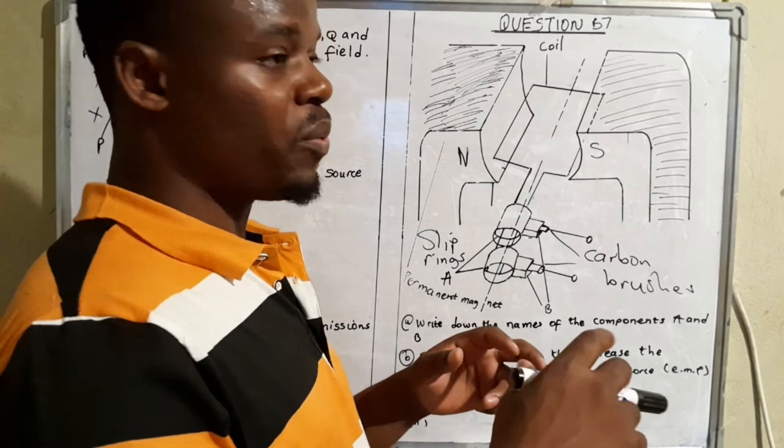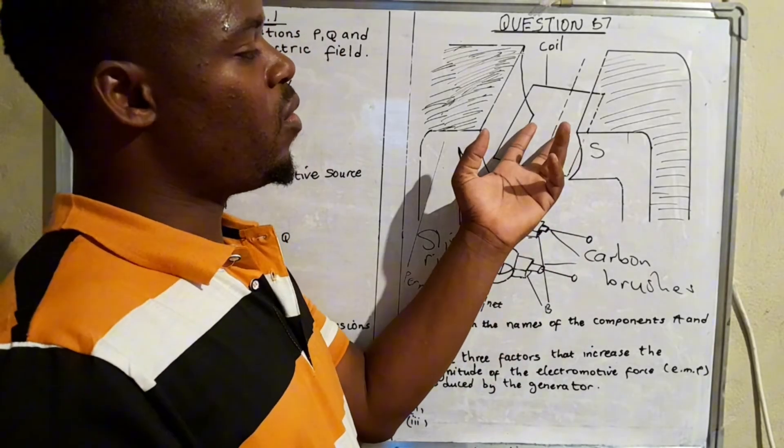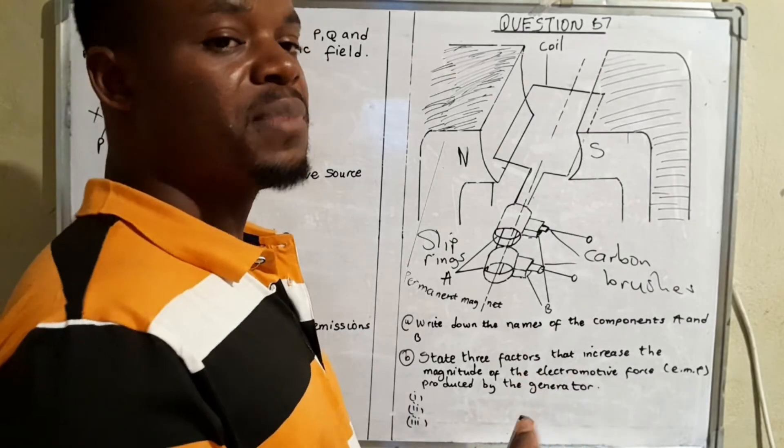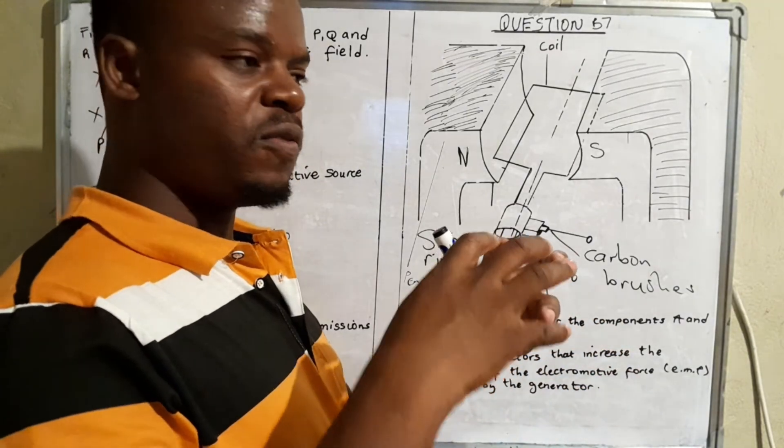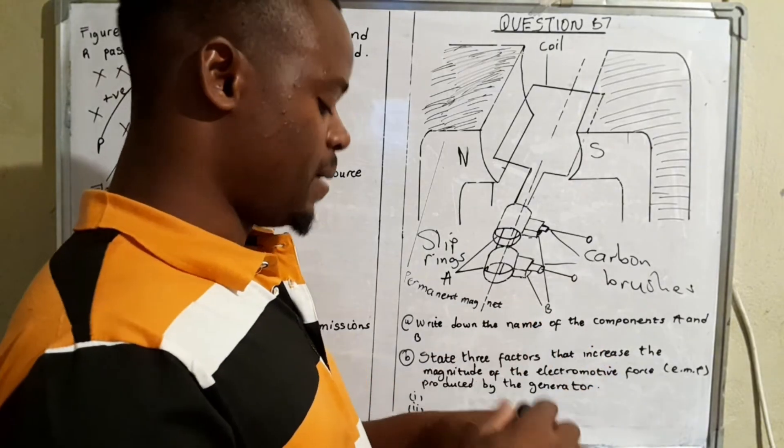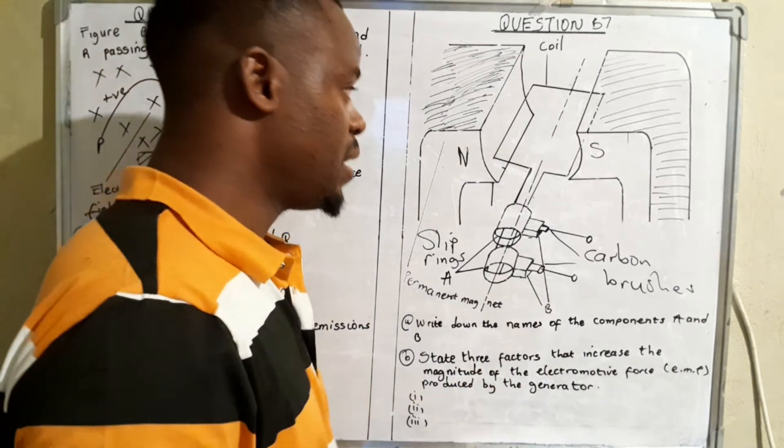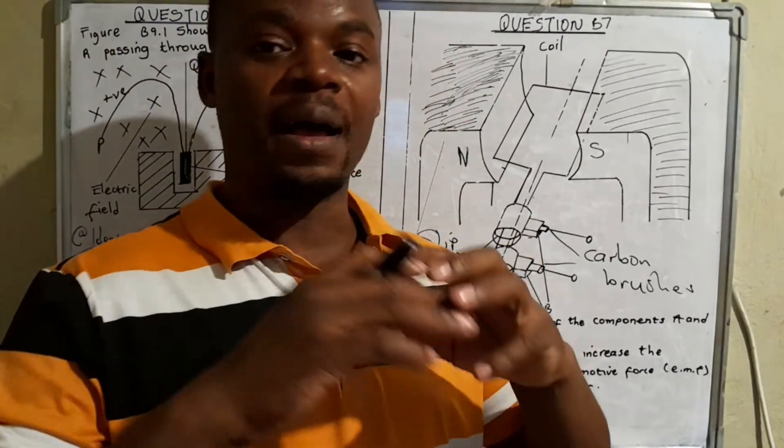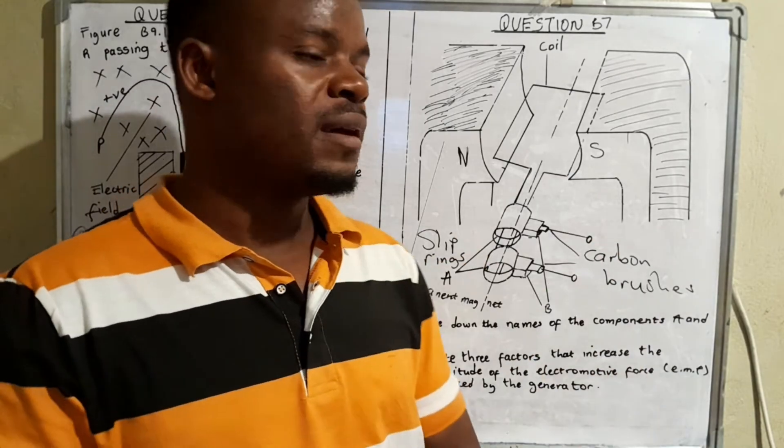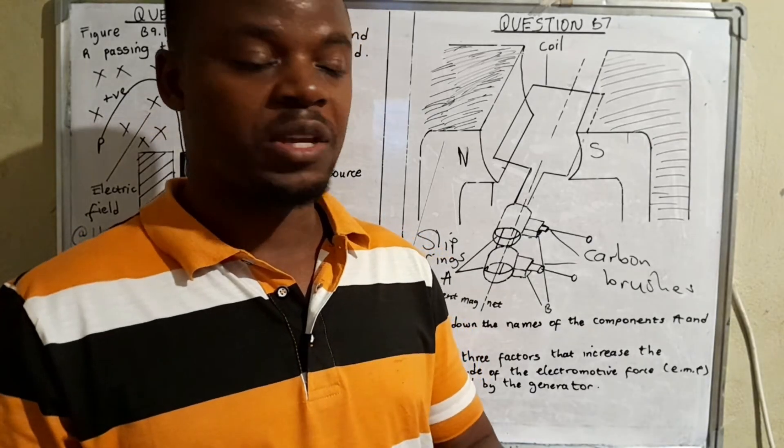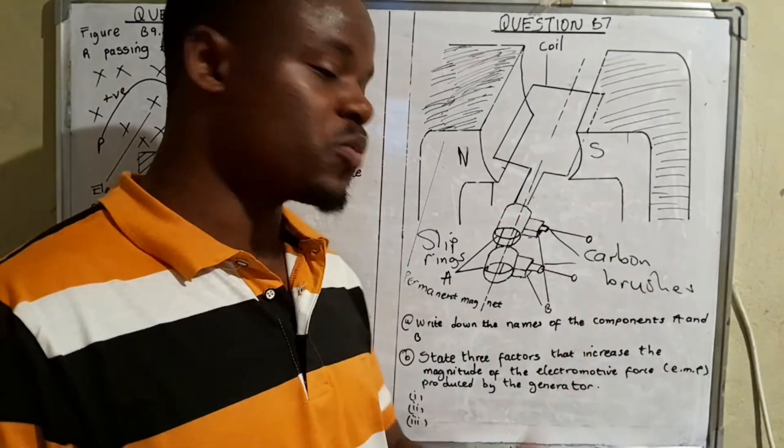The third factor is the number of turns on the coil. A coil normally has some turns on it, like a wire wound on it. The number of those windings determines the magnitude of the electromagnetic force that is induced. If it has more turns there will be a higher magnitude of electromagnetic force. If there are fewer windings then the electromagnetic force will not be as great. We're done with this question, let's move on.